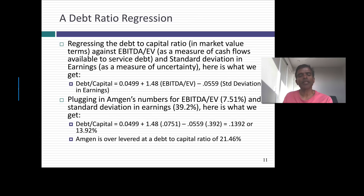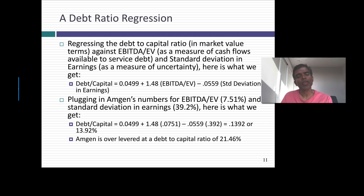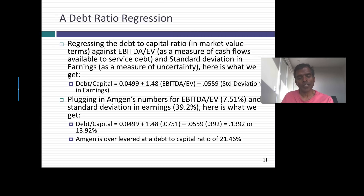I'm going to draw on statistics because I think it gives me a better shot at controlling for differences. I took the debt to capital ratio for the 20 companies and ran a regression against EBITDA as a percentage of enterprise value — that's a measure of how much cash you have, and the more cash you have, the more you should be able to borrow — and the standard deviation in earnings of each company. The higher the variance in earnings, the less you should borrow. I tried other things like tax rate and insider holdings, but they weren't statistically significant, so I threw them out.